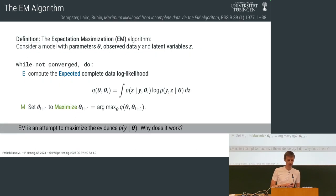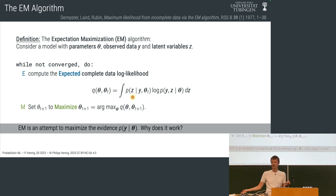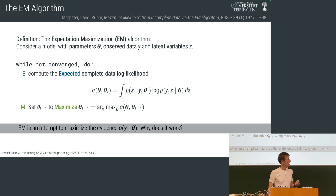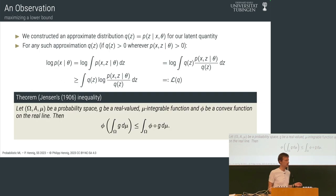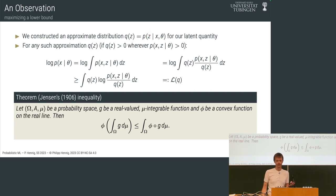What we're doing is constructing p(z|x, theta) — you can think of this as an approximate distribution over z, or the posterior distribution over latent variables that we don't know. We could call this distribution q to get rid of the x and theta notation. Then we can see that no matter which approximation we use — any probability distribution q, as long as it has the same support or at least as much support as the joint — we can do the following steps.